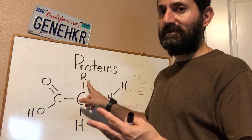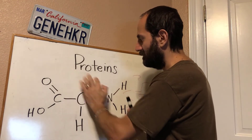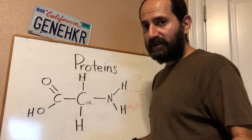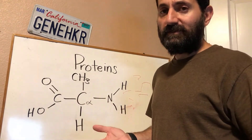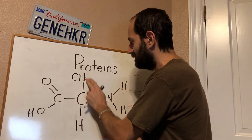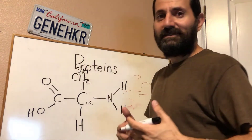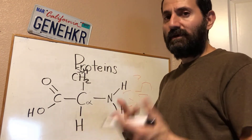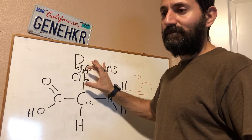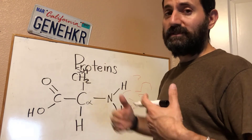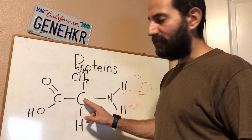For example, if R is H, that's the amino acid glycine. If R is CH₃, that's the amino acid alanine. If R is CH₂SH, that's the amino acid cysteine. Whatever this group is attached to the amino acid, that's what makes it that particular amino acid. The rest is called the backbone — it always has the carboxyl group, amino group, alpha carbon, and hydrogen.